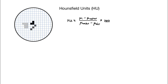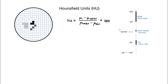Let's look at some typical values for Hounsfield units. Water has a Hounsfield unit of zero — you can see that from the definition. If you put water minus water, it's zero on top.